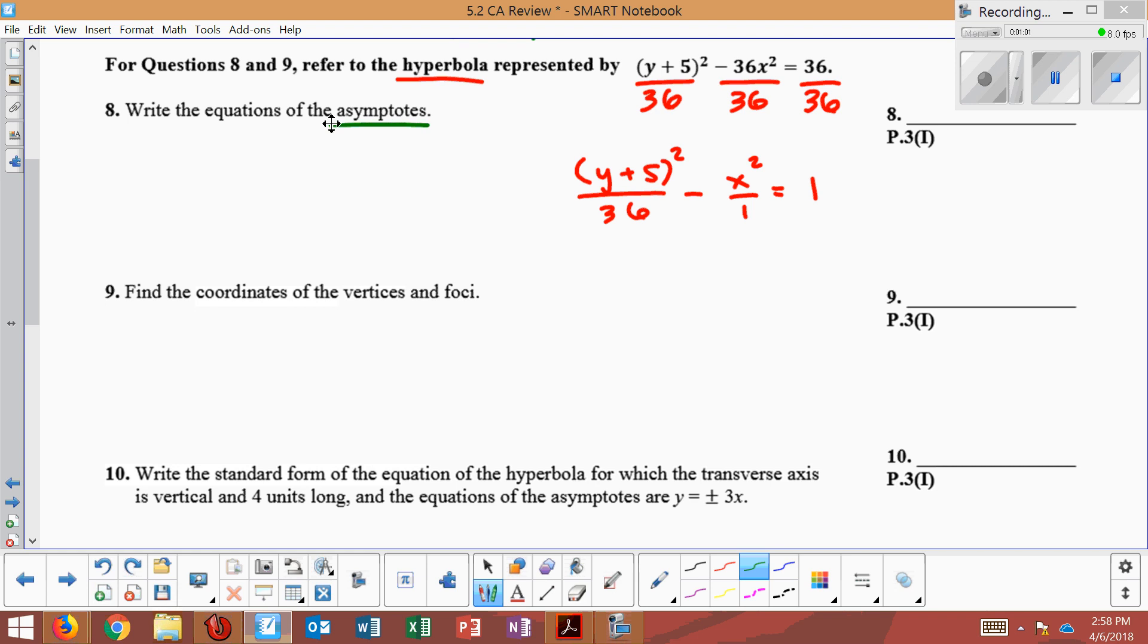Now, to find asymptotes. Asymptotes, remember, are equations in the form of y equals mx plus b, where m is rise over run. Now, to find the rise over run, we're going to use the a and b values.